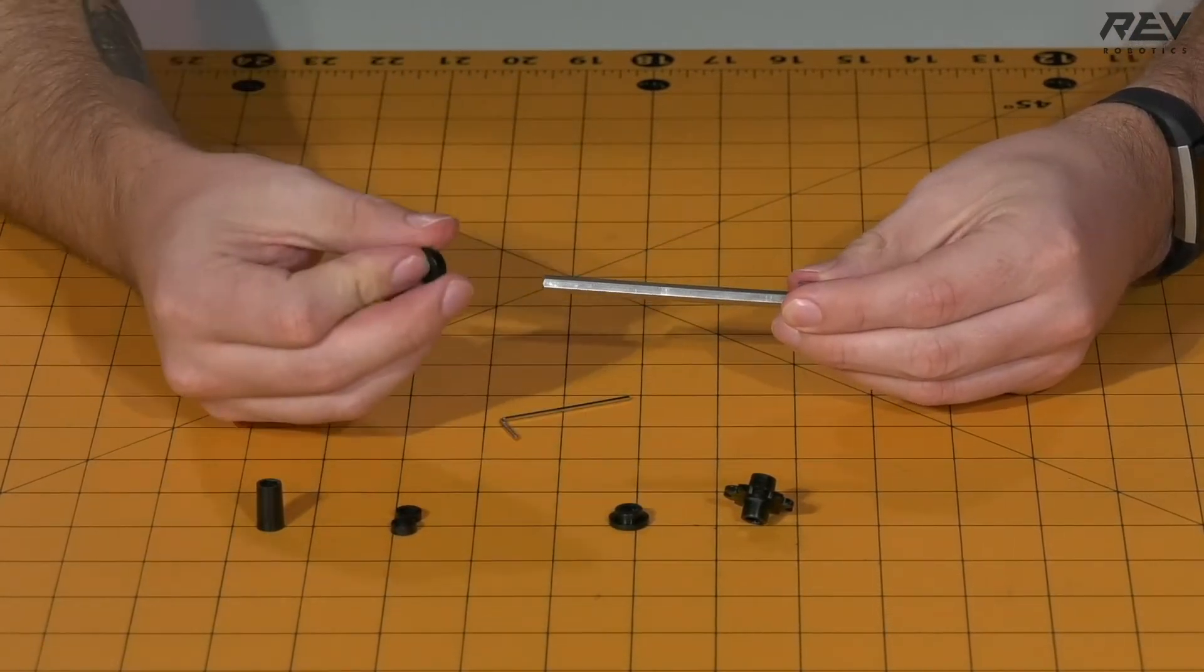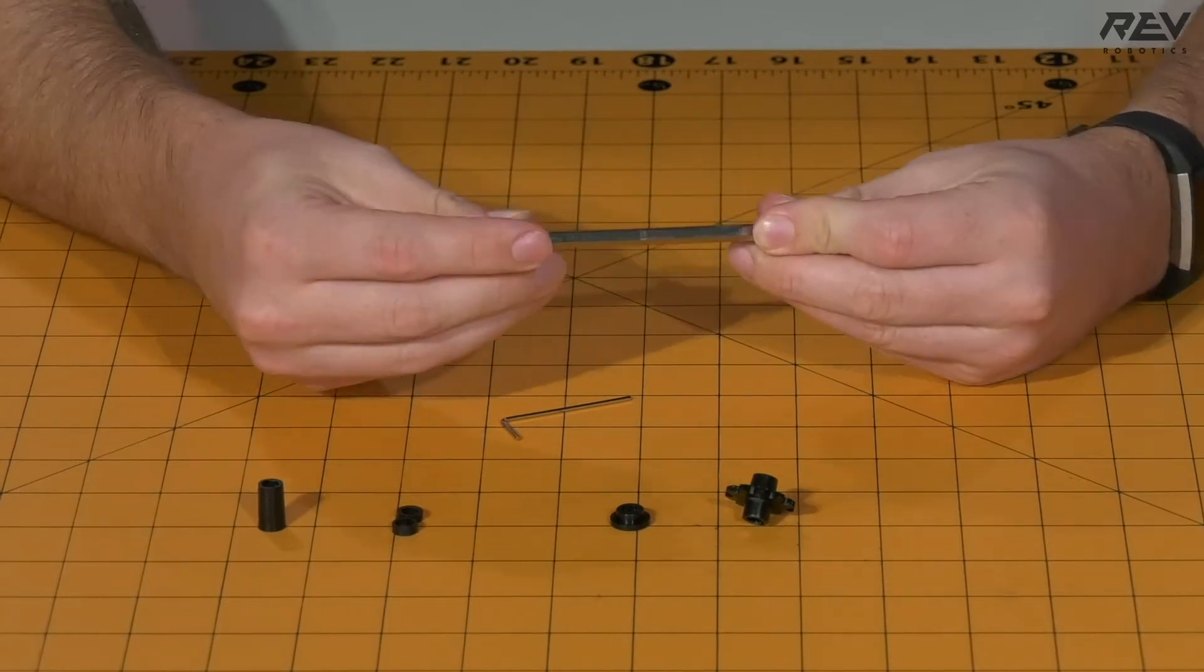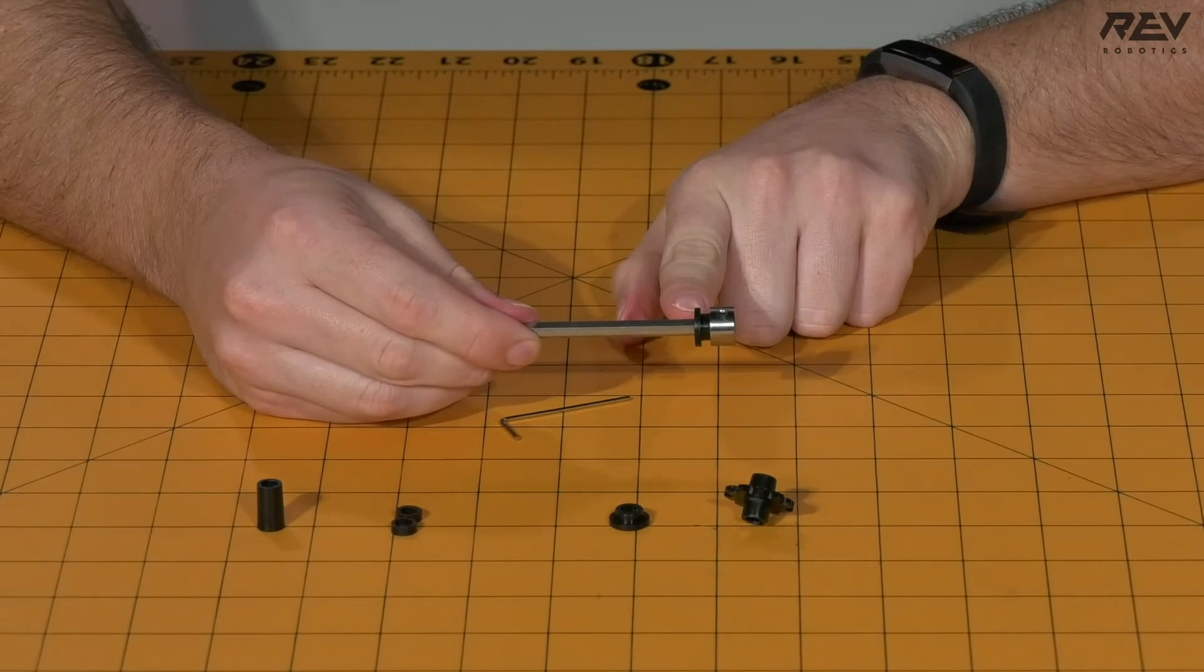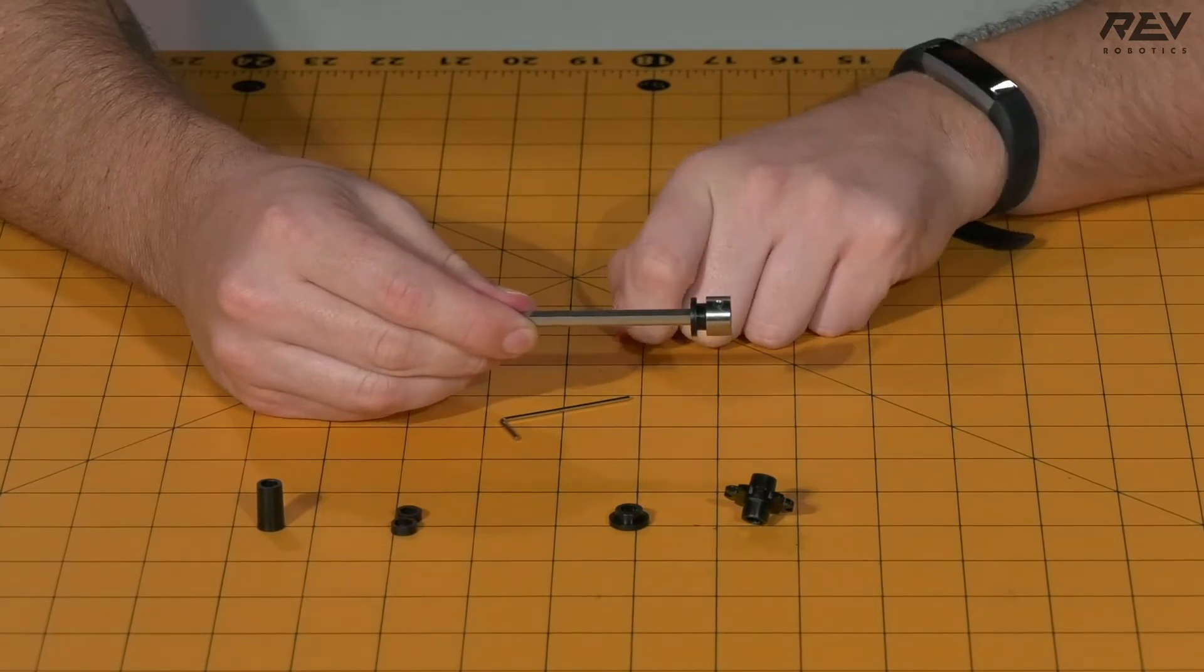Next, take your short through-bore bearing and slide that onto the shaft. Note the location of the flange relative to the shaft collar. This is going to be important later on during the assembly.